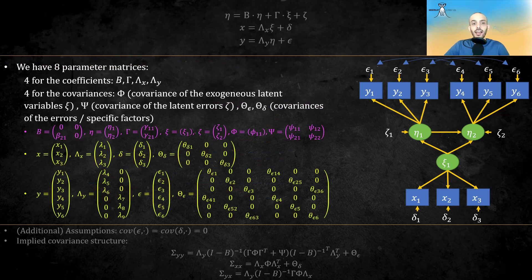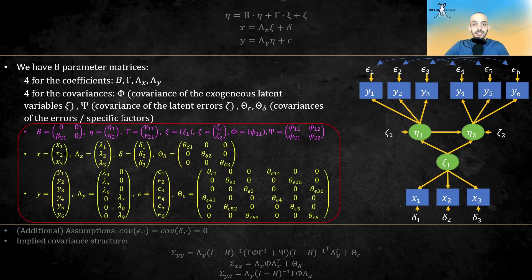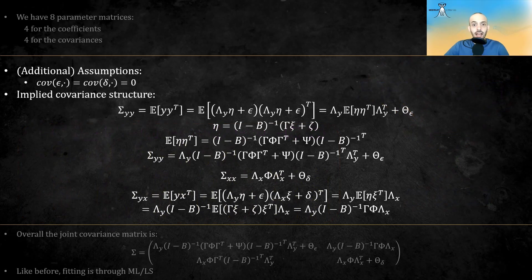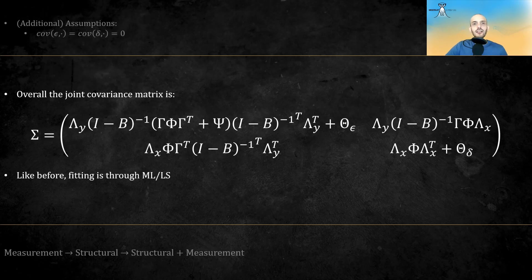So we have eight parameter matrices, four for the coefficients, and four for the covariances. Here you can see the matrix form of the same path diagram that is shown on the right. With some more hairy math, we can derive the implied covariance matrix for the y-x vector. You can pause the video to go over this yourself if you feel the need. The joint covariance of the y-x vector is thus this full scary matrix, and just like before, we will use maximum likelihood or least squares to estimate the coefficients of the model.